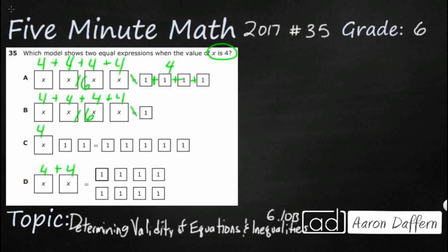C is just slightly different. We've got this 4 and these two little ones right here, so that is going to be 6. And we've got 1 plus 1 plus 1 plus 1 plus 1 on the other side. That's 5. Really close.